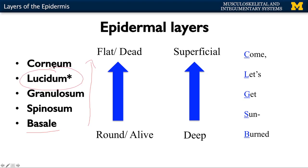Lucidum is only present in thick skin, so only in thick skin will you have that layer. The cells in the deepest layers are going to be round, alive, and capable of reproducing and creating more cells. The cells in the more superficial portions are all going to be flat and dead — pretty much from granulosum up.